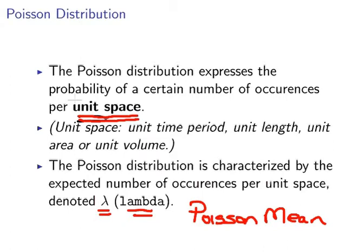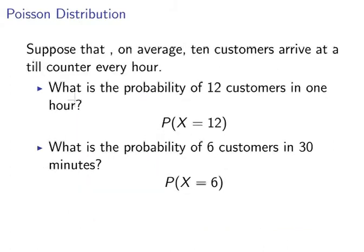Now suppose that on average 10 customers arrive at a till every hour. So this is our Poisson mean here is 10. I'm going to call it lambda equal to 10 for one hour.